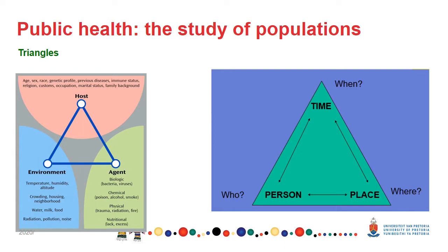You learned about the first triangle. Earlier this week, we discussed the second triangle of who, when and where. Epidemiology is the study of the distribution and determinants of health-related states or events in specified populations and the application of this study to the control of health problems.